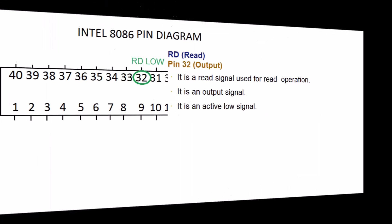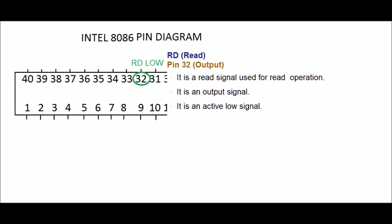RD, READ. PIN 32, output. It is a READ signal used for READ operation. It is an output signal. It is an active low signal. It means it contains BAR over it.